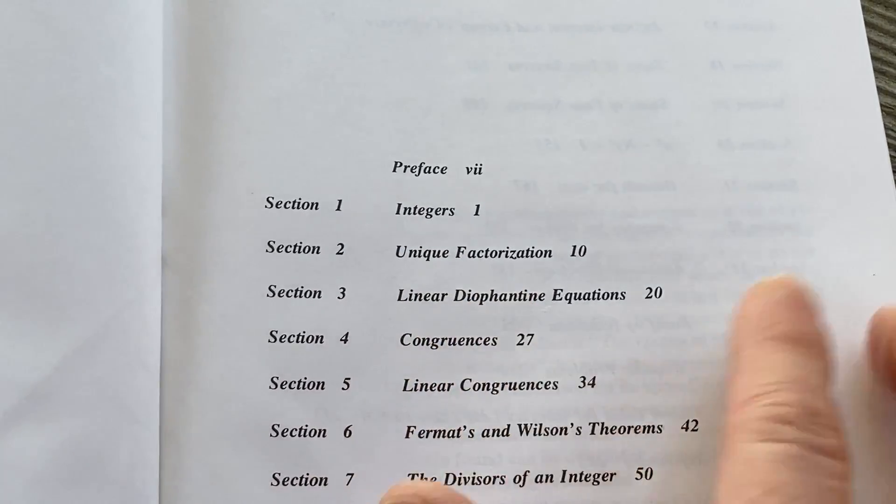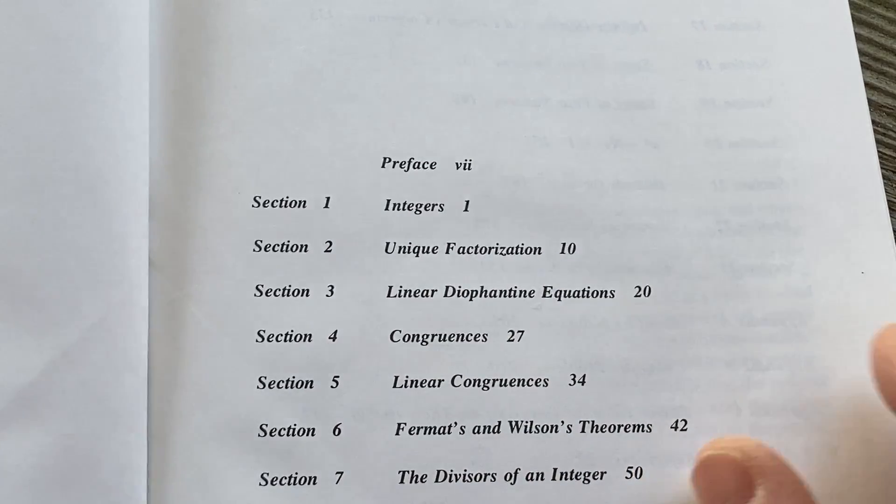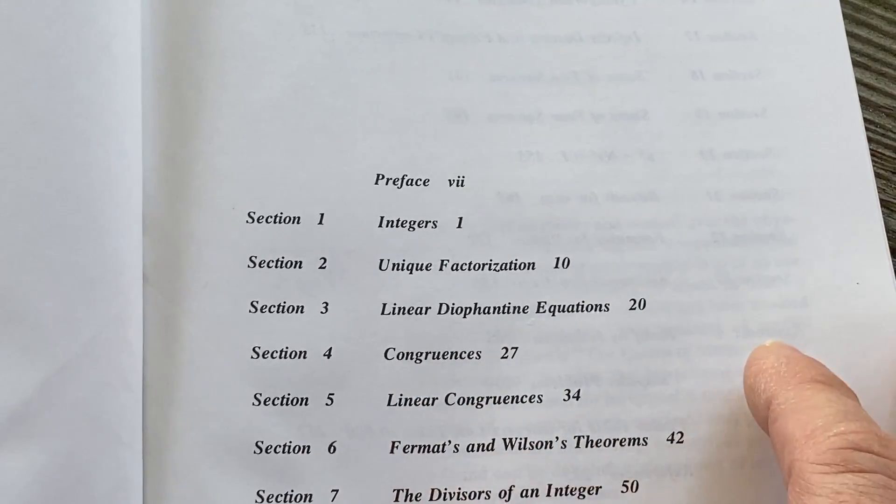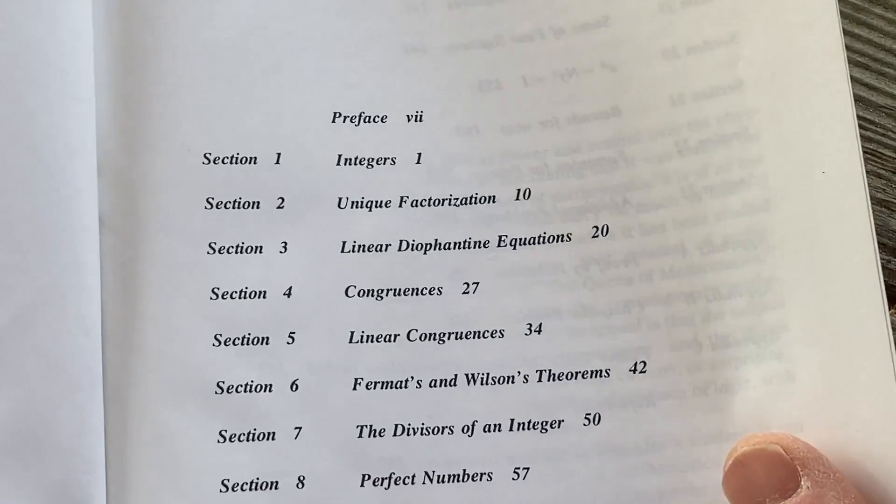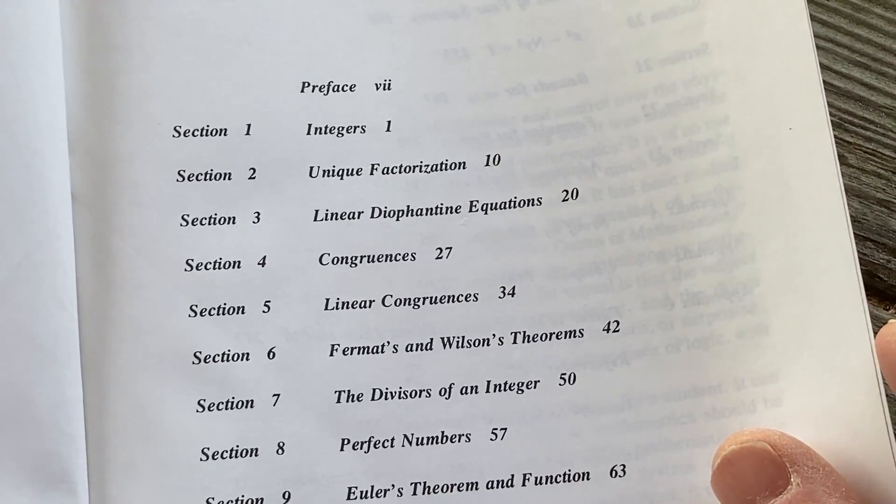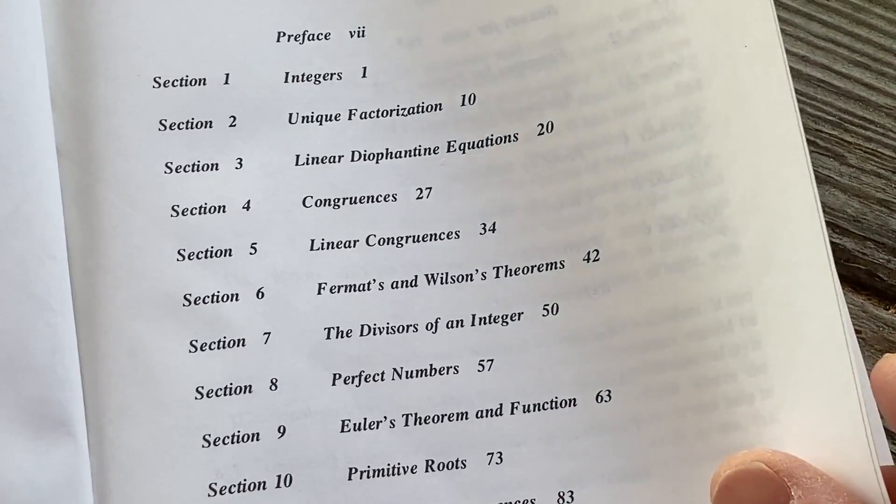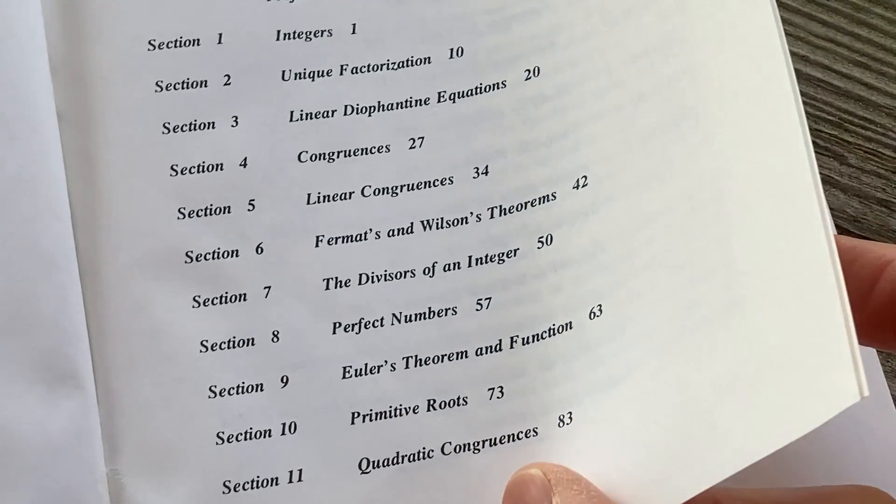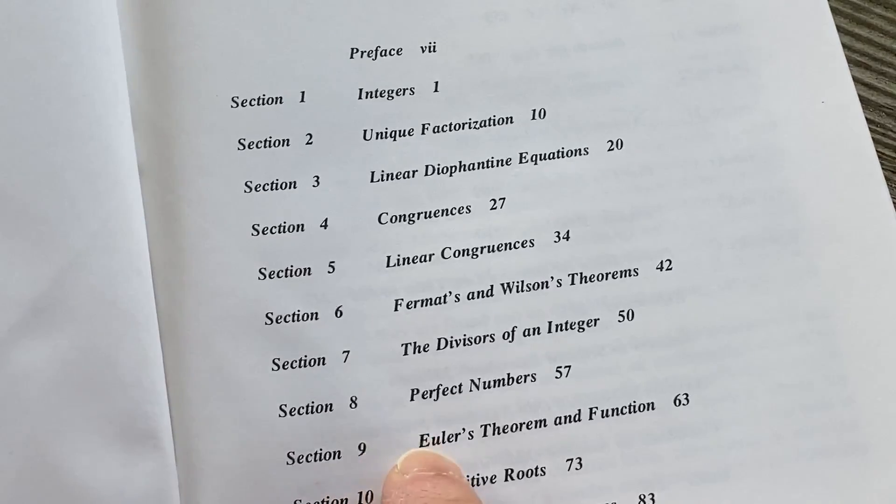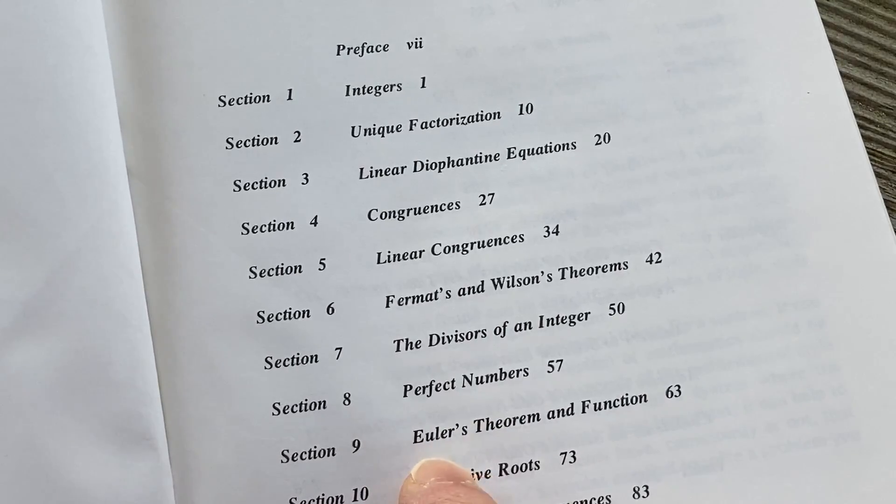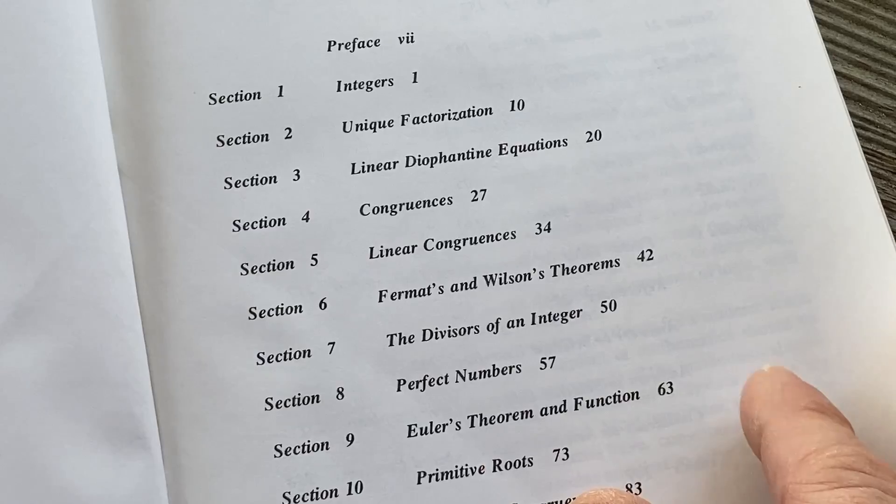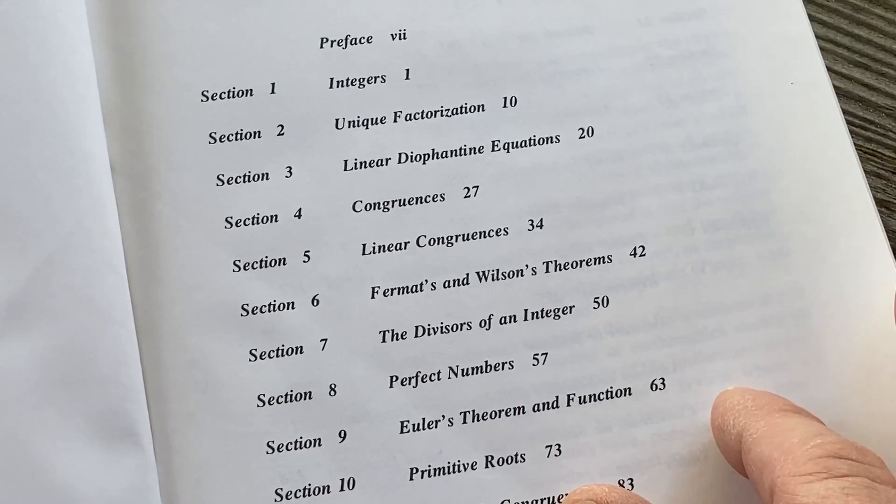Integers, unique factorization, linear Diophantine equations, congruences, linear congruences, Fermat's and Wilson's theorem, the divisors of an integer, perfect numbers, Euler's theorem and function, primitive roots, quadratic congruences. I just want to say something here on the pronunciation. I used to always say Euler and I think that sounds so much cooler, but unfortunately it's pronounced Euler. It always makes me think of Texas for some reason.